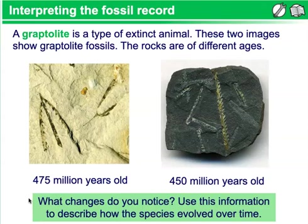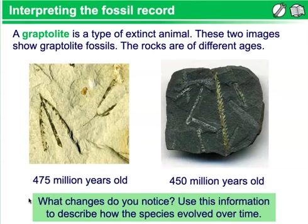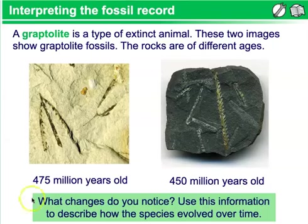Graptolites are extinct marine animals that existed between the Middle Cambrian and the Lower Carboniferous ages. They were colonial animals with two basic parts to their skeleton: stipes, or strands, and theca, which are the tooth-like structures that housed individual organisms.